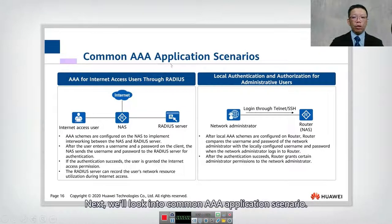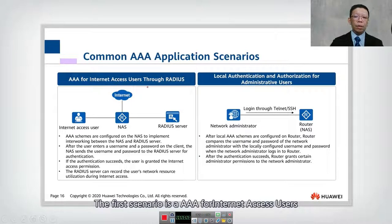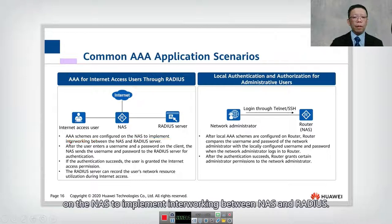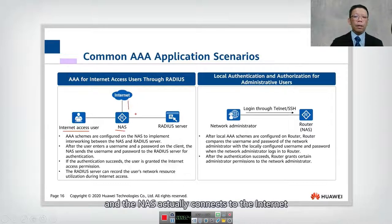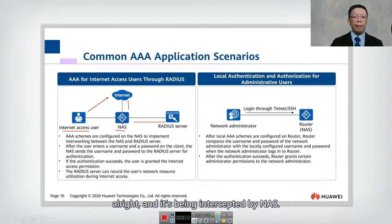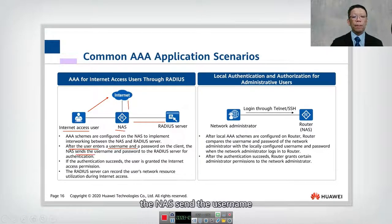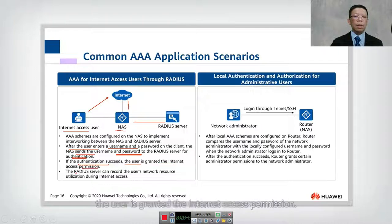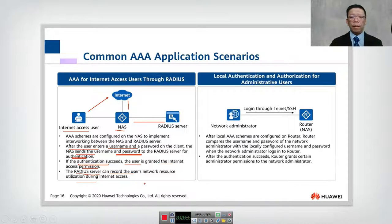Next, let's look at common AAA application scenarios. The first scenario is AAA for internet access users through RADIUS. Here the AAA scheme is configured on the NAS to implement interworking between the NAS and RADIUS server. The user connects to the NAS, which connects to the internet and to the RADIUS server. The NAS intercepts the user, requires authentication, and sends the username and password to the RADIUS server. If authentication succeeds, the user is granted internet access.